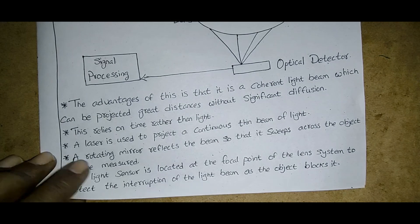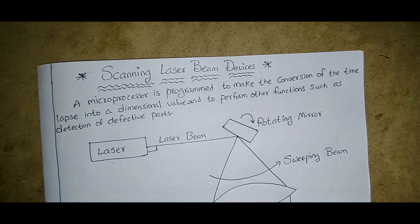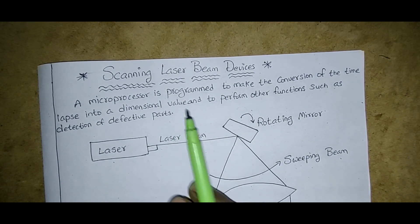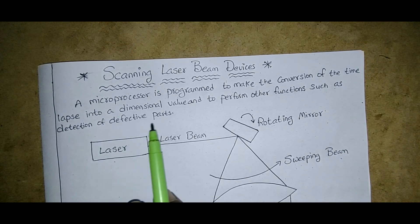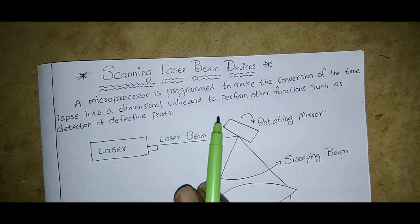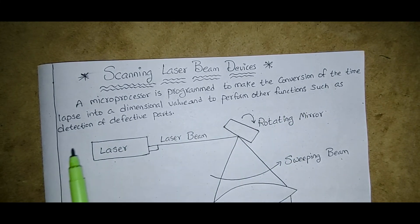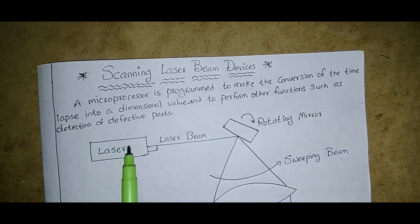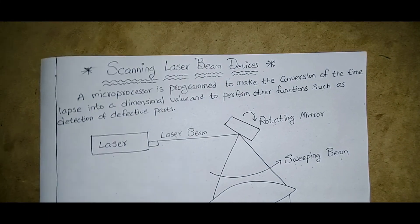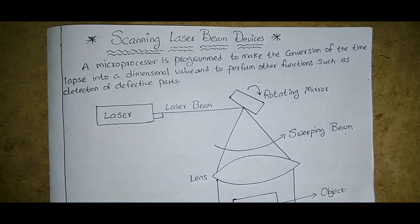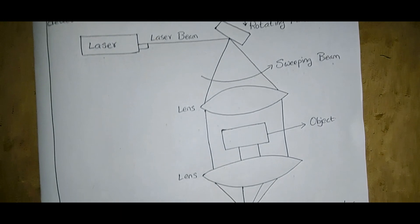That is how the entire scanning laser beam device setup works. A microprocessor is programmed for the conversion of the time lapse into a dimensional value, and to perform other functions such as detection of defective parts.